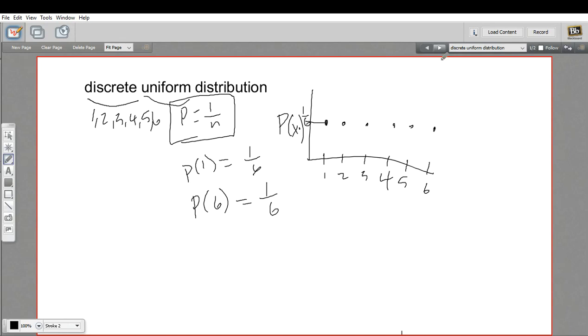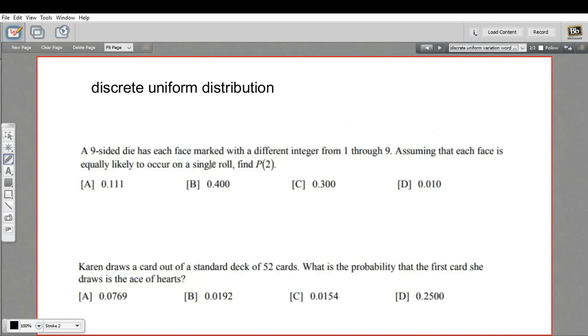So that's the key to remember for these word problems that we're going to do here. Let's read this first one. It says a 9-sided die has each face marked with a different integer from 1 through 9. So that does sound like a discrete, uniform problem. You've got 9 different things. The integers 1 through 9. So our n is 9 here.